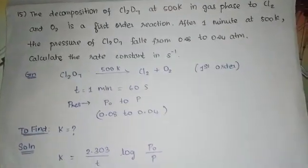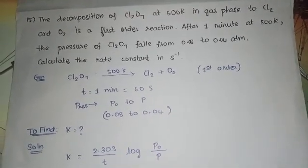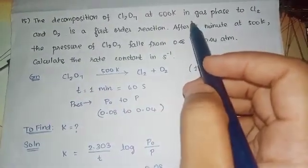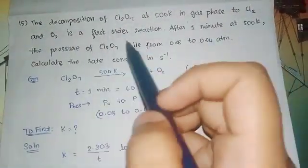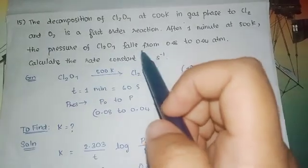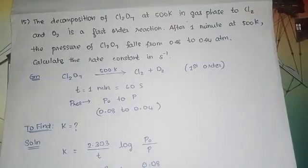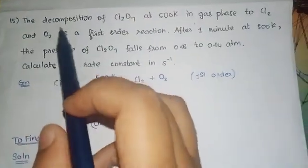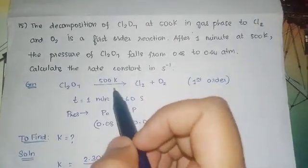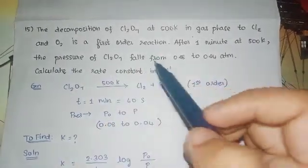Welcome back to our channel. In 12th standard chemistry, chapter number 7, chemical kinetics, today we have book back answers. The decomposition of Cl₂O₇ at 500 Kelvin in gas phase to Cl₂ and O₂ is a first order reaction. Cl₂O₇ decomposes on heating at 500 Kelvin, giving Cl₂ and O₂. This is a first order reaction.